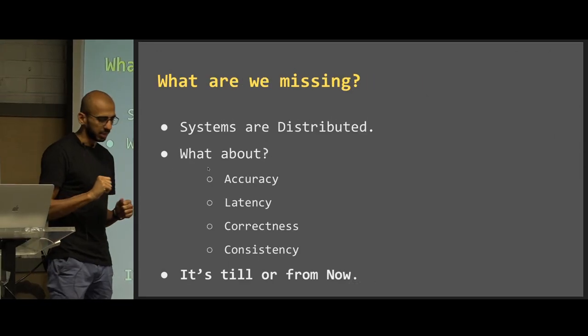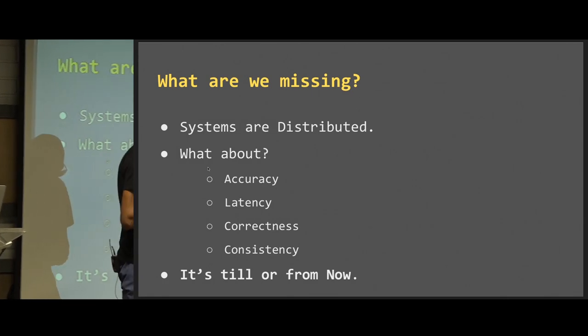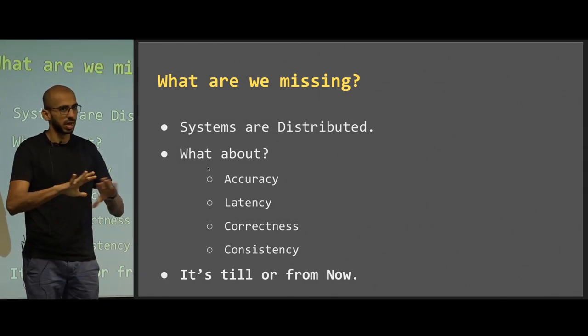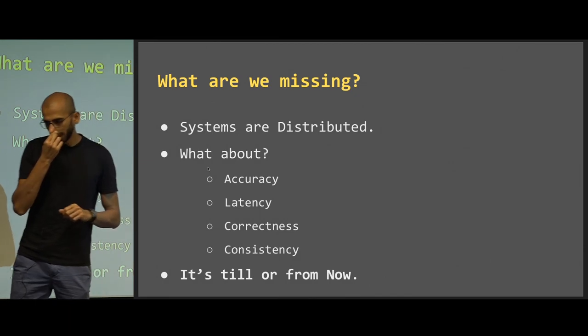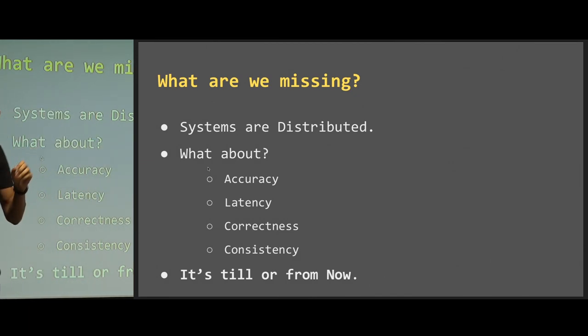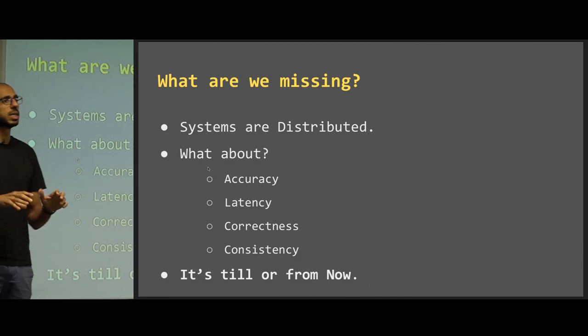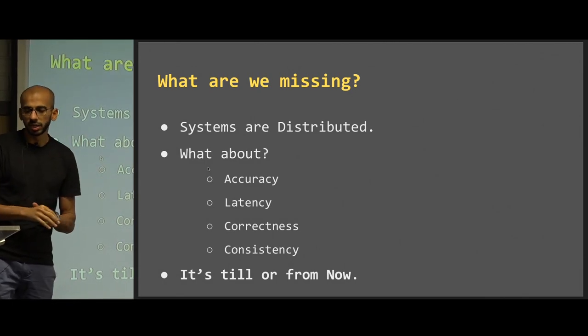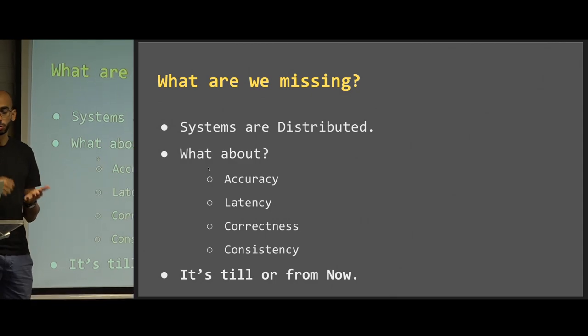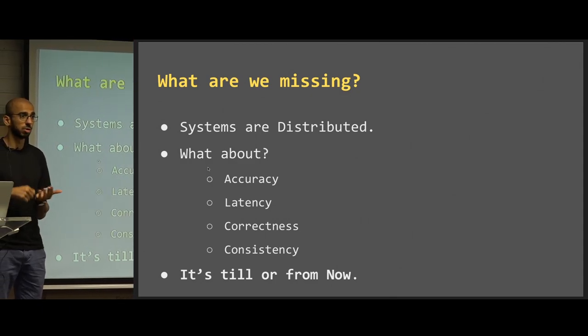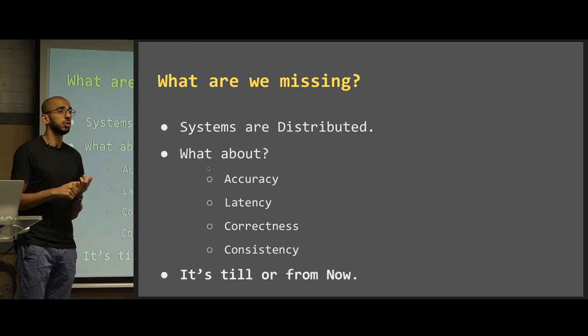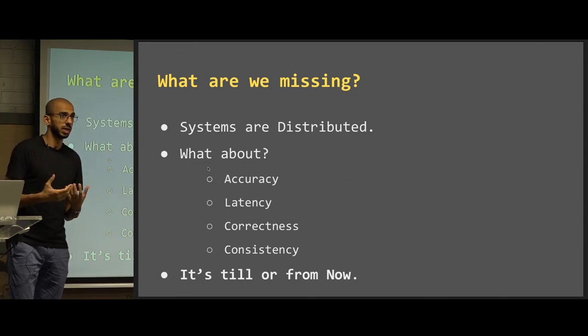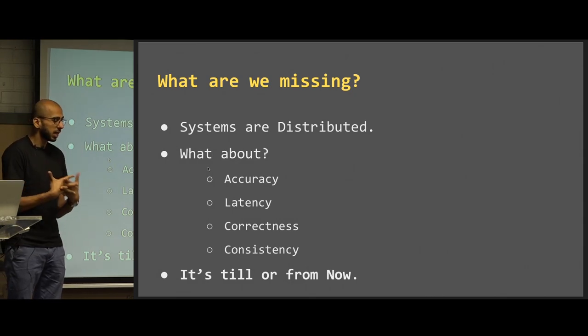I mean, I'm sure a lot of you would have heard this term observability. Has anybody heard that term observability? Okay. What are we missing here? What we are missing is systems are actually distributed in nature as we are growing, right? Now, no longer server is going to run on one single machine and failures are far beyond what we see as RAM failure, CPU failure, etc. What about accuracy? What about latency? What about correctness? What about consistency?